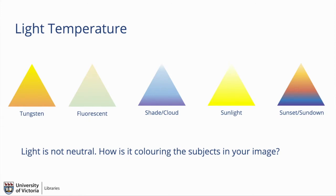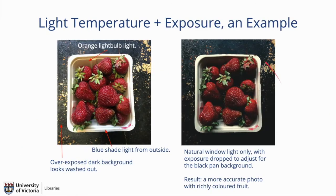Light can bounce off a colored object and hit the side of someone's face, making their skin look green. You need to pay attention to what light is hitting your subject, and too many light sources can result in mixed light, which is usually unflattering. The sensor can get tricked by what it sees, and it is up to us to intervene and correct if necessary to get the best results.